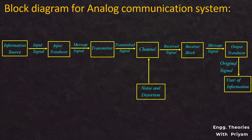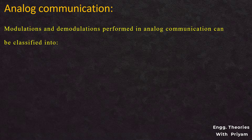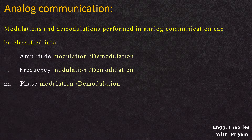In the analog communication system, an analog signal is first converted to an electrical signal or message signal, then passed through the communication channel. The transfer can be done using analog modulation methods or no modulation at all. Modulation is performed in the transmitter section and demodulation in the receiver section. Modulation and demodulation in analog communication can be classified into amplitude modulation, frequency modulation, and phase modulation.